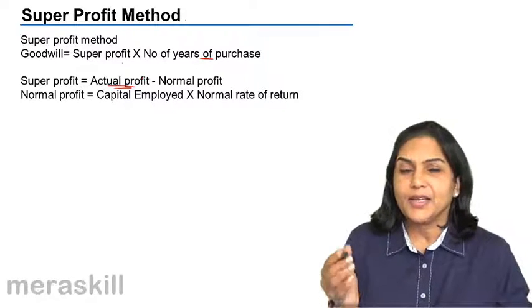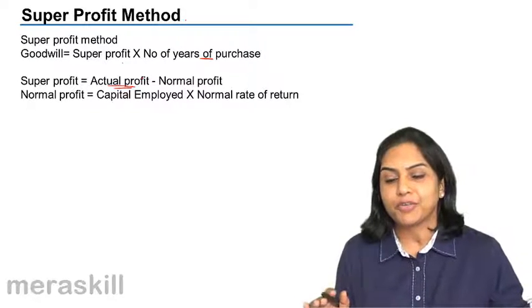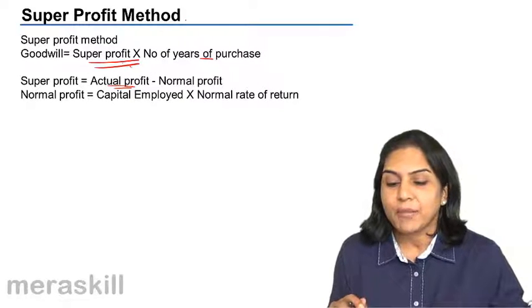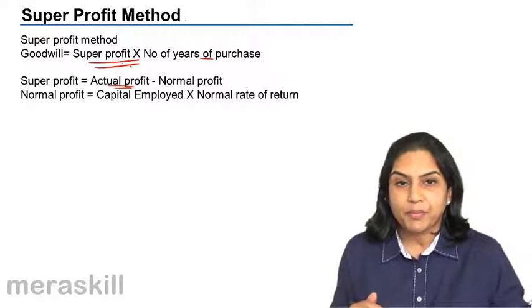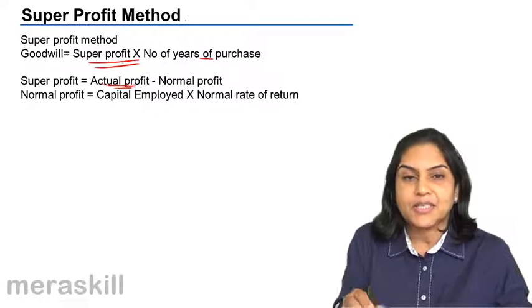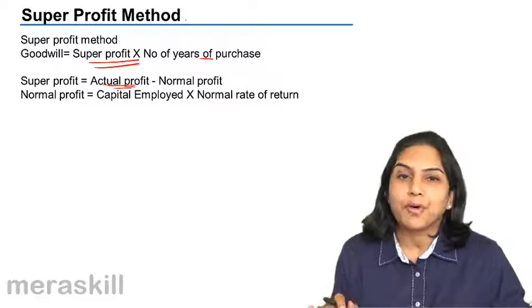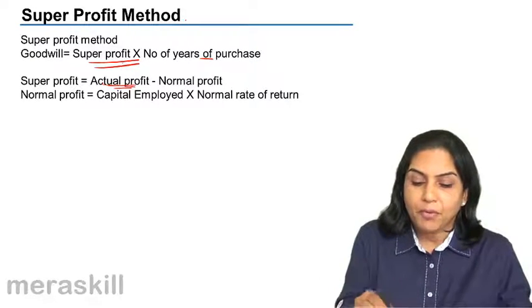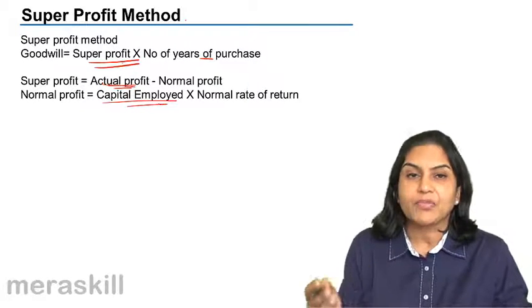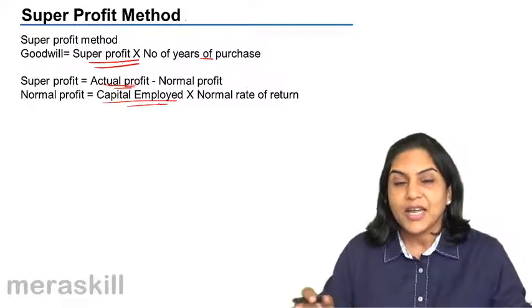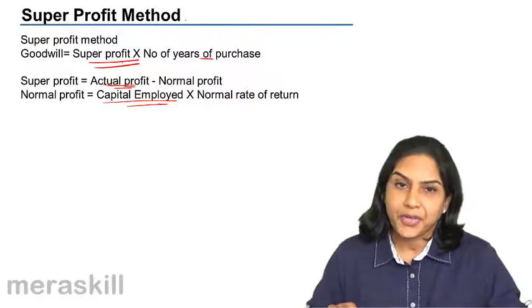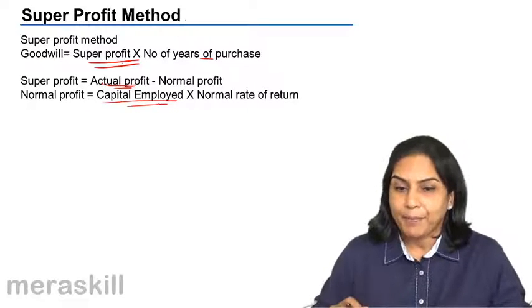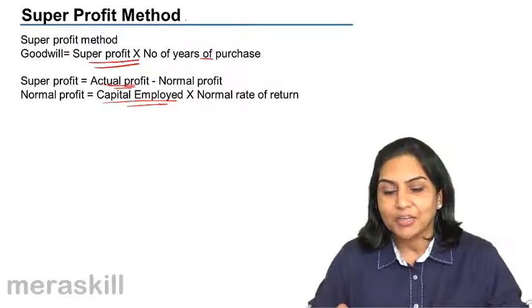So goodwill here, just like in the previous method it was average profit into number of years of purchase, here it is super profit — extra profit — into the number of years of purchase. Super profit is the actual profit that the business is making minus the normal profit that it should have been making. Normal profit is computed as the total capital employed by the business into the normal rate of return — the capital that the partnership has sunk into the business.